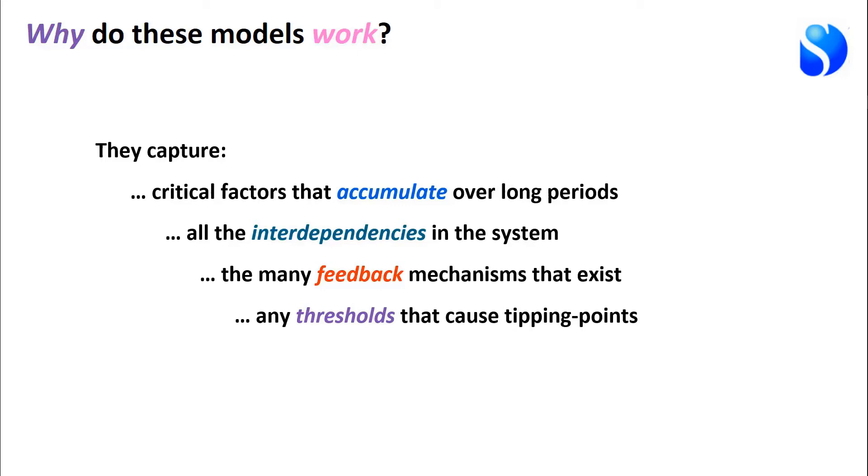The models also capture the thresholds that cause tipping points in the real world. As the number of owners of this product grows slowly initially, there comes a point where that word of mouth feedback effect causes a tipping point and growth accelerates and piles ahead. Lastly, these models can and should, where relevant, include intangible factors—things like reputation, things like staff motivation and skills, all of which are pretty tough to do in spreadsheet models.